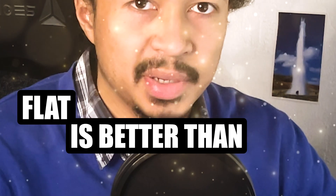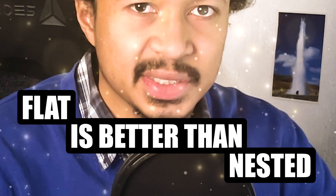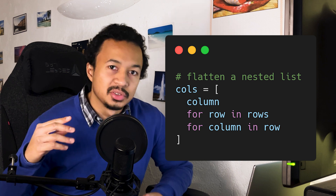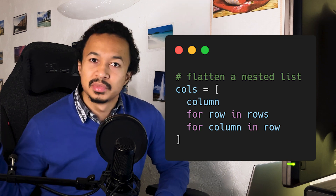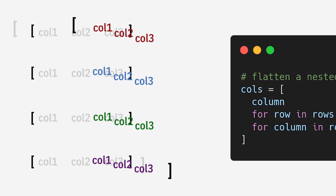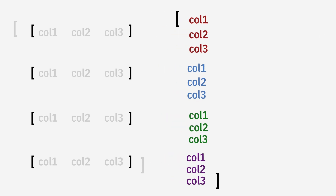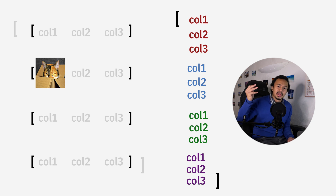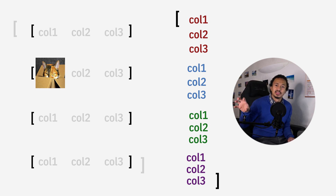The Zen of Python tells us flat is better than nested. So let's flatten our list of list of columns into a list of columns. But do remember that each column in the flattened list corresponds to a particular location in the list of list of columns, so we still end up putting the image in the correct location in the matrix.